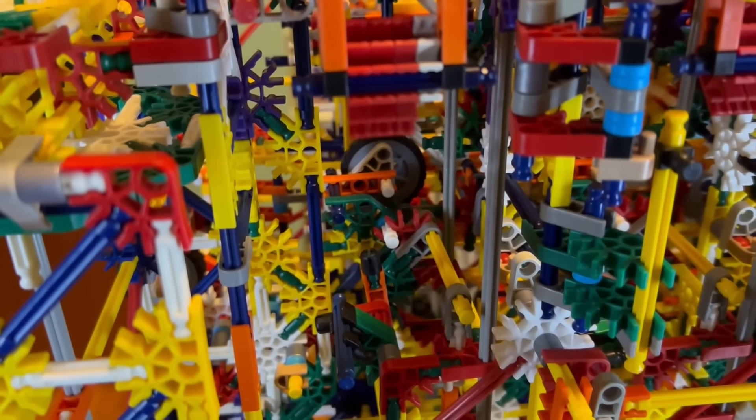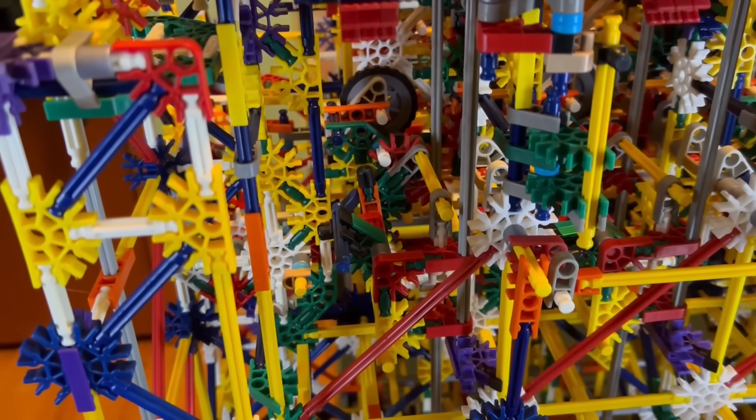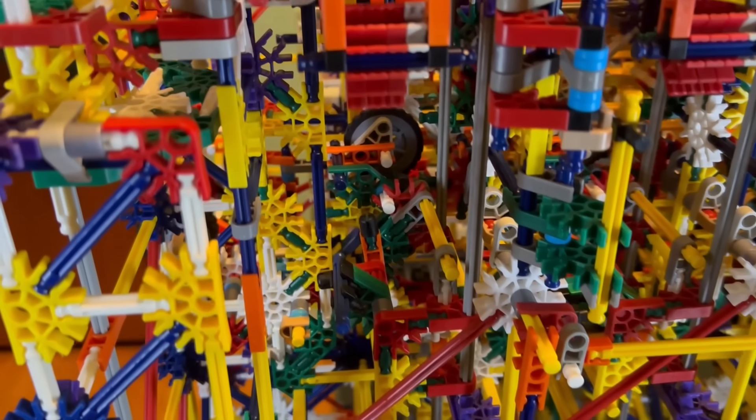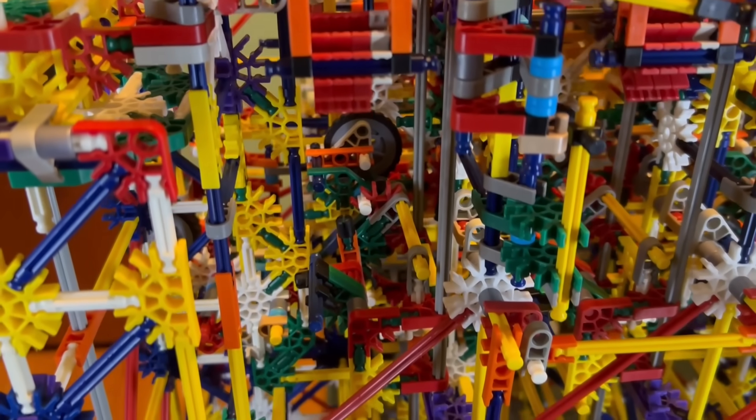This will cause each column to automatically count the B register as a one, and then whatever is in the A register will be added onto that. And of course, since it's negative one, it's actually whatever is in the A register minus one.